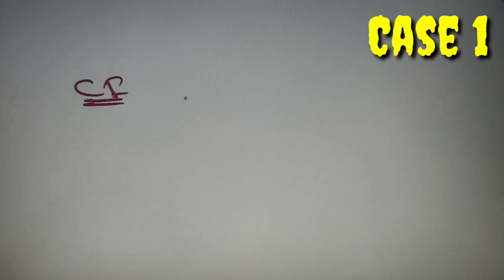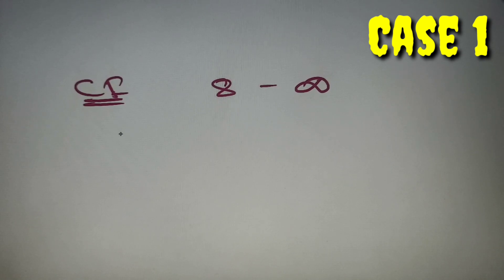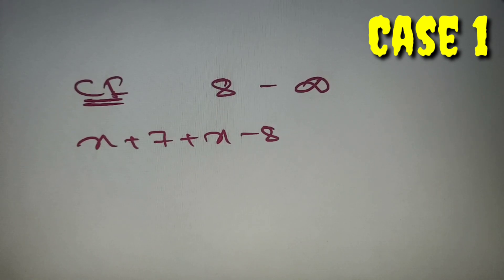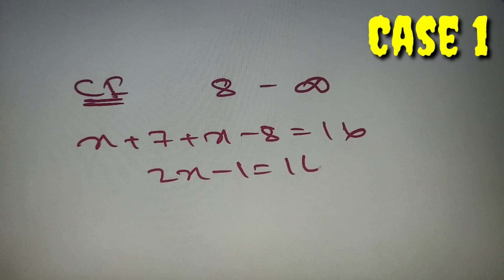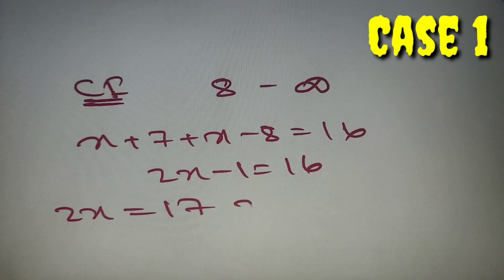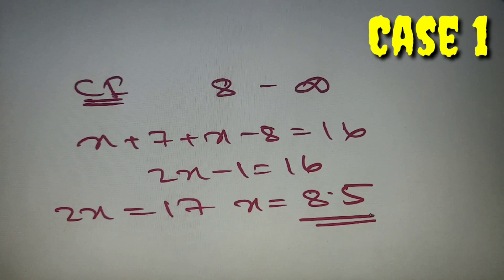For case 1, we take x from 8 to infinity, where both moduli are positive. So we get x + 7 + x - 8 = 16, which gives 2x - 1 = 16, so 2x = 17, and x = 8.5. For case 1, the value of x is 8.5.